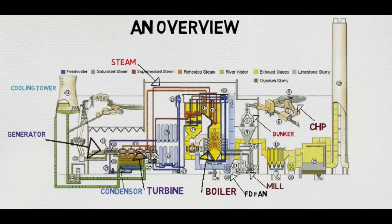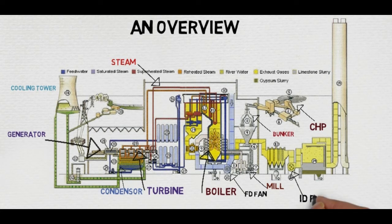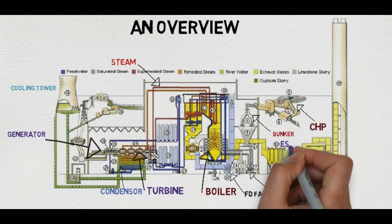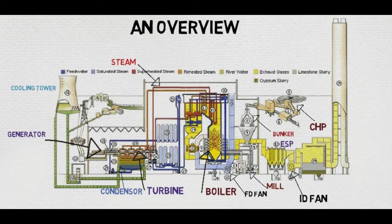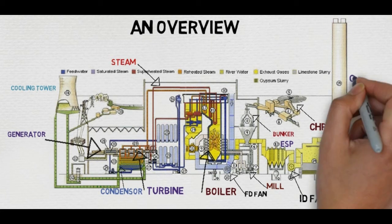The flue gas and ash after combustion are sucked by the ID fan and pass through the ESP, and then it is released through the chimney.